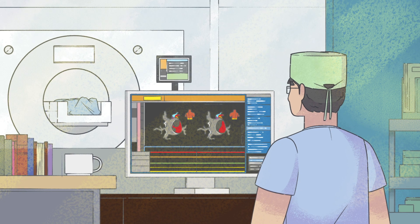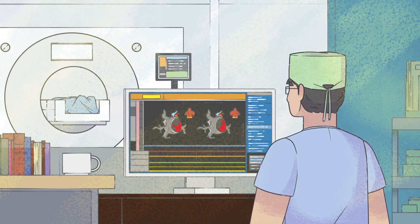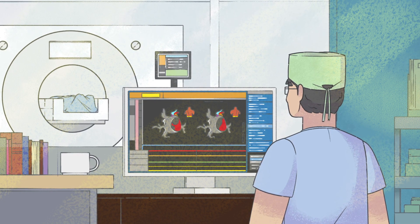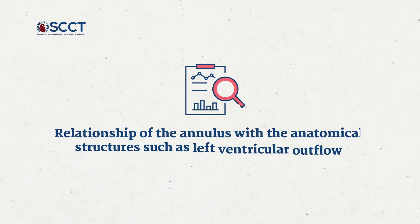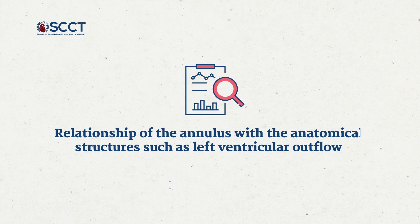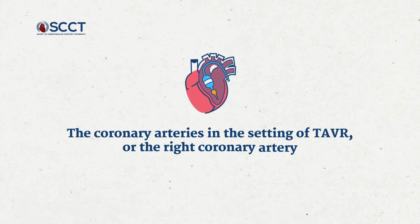CT is also an elegant tool for planning interventions beyond the annulus — whether for the aortic, mitral, or tricuspid valve — understanding the relationship of the annulus with anatomical structures such as the left ventricular outflow tract, the coronary arteries in the setting of TAVR, or the right coronary artery as it relates to transcatheter tricuspid valve replacement.